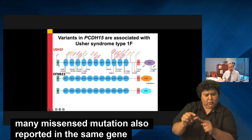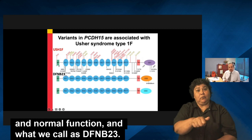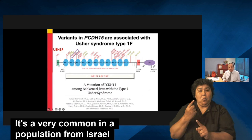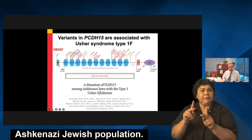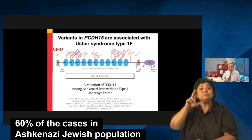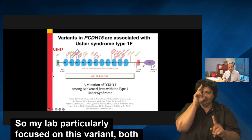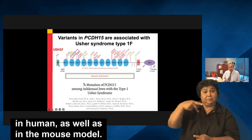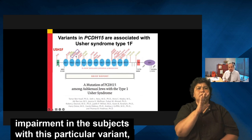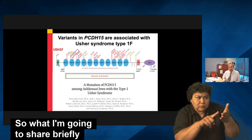Interestingly, there are also many missense mutations reported in the same gene that cause just deafness with normal vision and normal function, which we call DFNB23. Among all known variants, one particular variant — R245X — is very common in the Ashkenazi Jewish population from Israel, with a carrier frequency of almost 2%. This variant is known to cause around 60% of Usher syndrome type 1F cases in that population. My lab particularly focused on this variant both in human and in the mouse model.